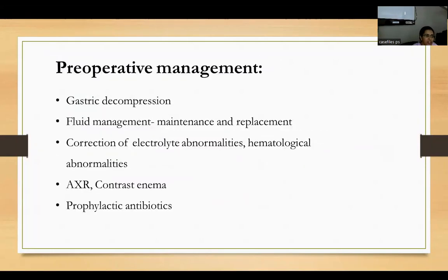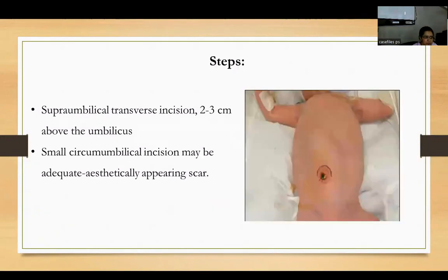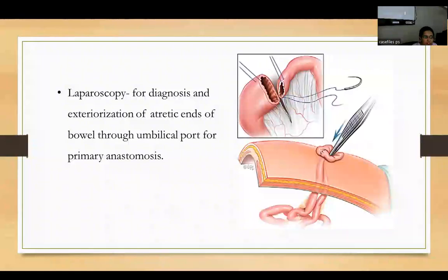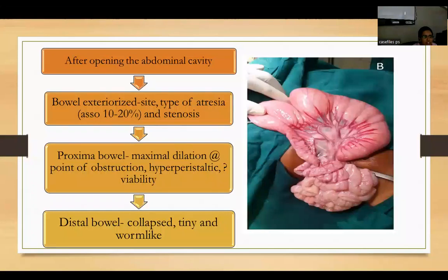For jejunoileal atresia, preoperative management includes gastric decompression, fluid management for maintenance and replacement, correction of electrolyte and hematological abnormalities, abdominal X-ray, contrast enema, and prophylactic antibiotics. A supraumbilical transverse incision 2–3 cm above the umbilicus, or a small circumumbilical incision for a more aesthetic scar, is used. Laparoscopy can also be performed for diagnosis and exteriorization of the atretic bowel ends through the umbilical port for primary anastomosis. After opening the abdomen, bowel is exteriorized to identify the site and type of atresia, as well as any associated atresia seen in 10–20% of cases.